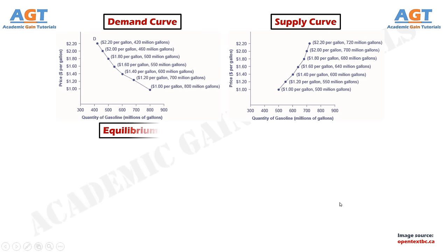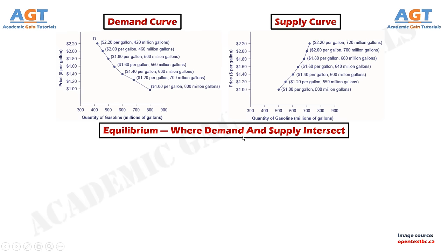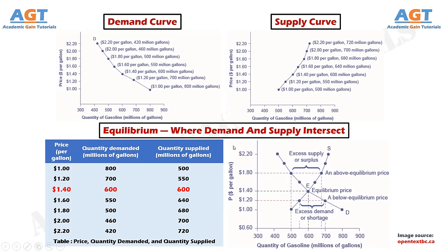Equilibrium — where demand and supply intersect. Because the graphs for demand and supply curves both have price on the vertical axis and quantity on the horizontal axis, the demand curve and supply curve for a particular good or service can appear on the same graph. Together, demand and supply determine the price and the quantity that will be bought and sold in a market. This figure illustrates the interaction of demand and supply in the market for gasoline. The demand curve D and the supply curve S are shown together.